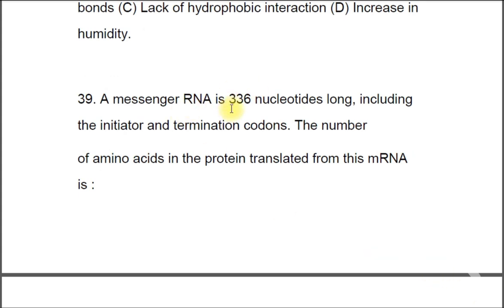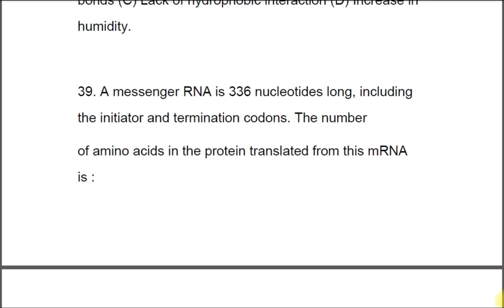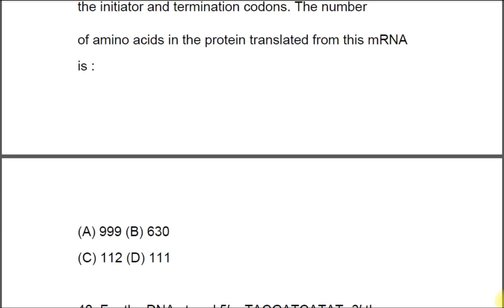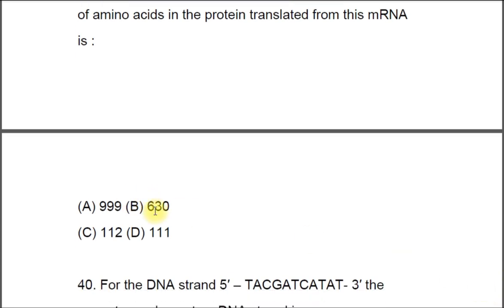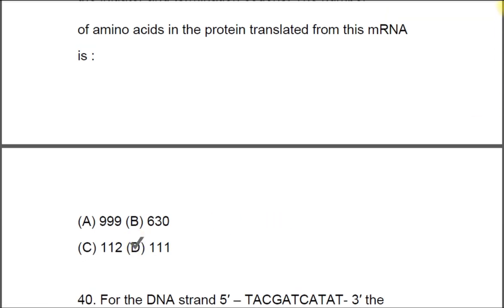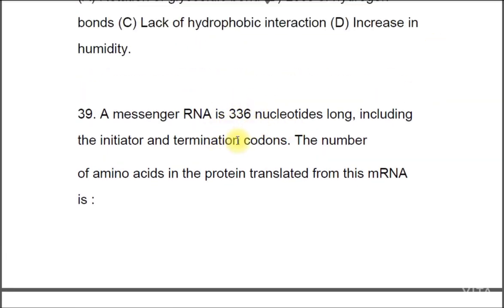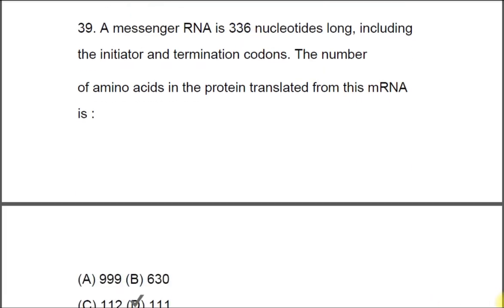Question 39: A messenger RNA is 336 nucleotides long, including initiator and termination codons. The number of amino acids in the protein translated from this mRNA is A) 999, B) 630, C) 112, D) 111. The correct answer is D, 111. From 336 nucleotides, subtract 3 for the termination codon to get 333. Dividing 333 by 3 gives 111 amino acids, as the initiator codon AUG codes for methionine and is counted.